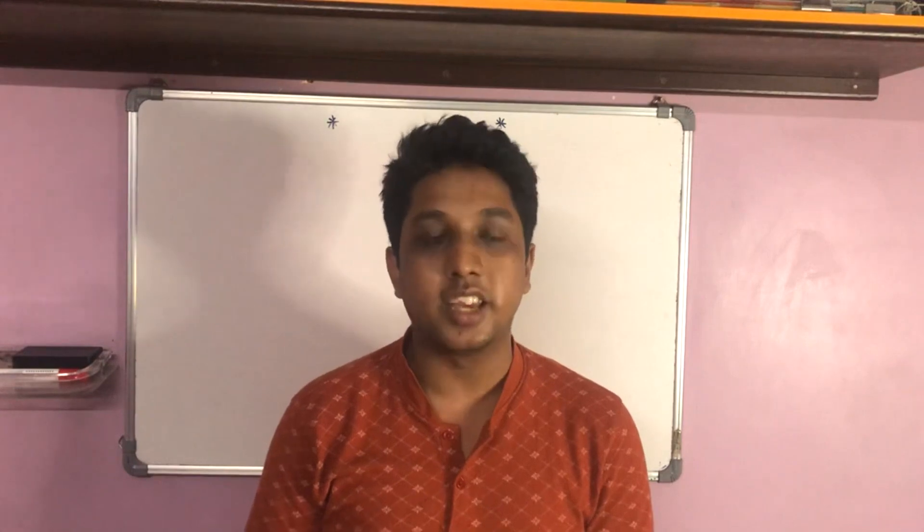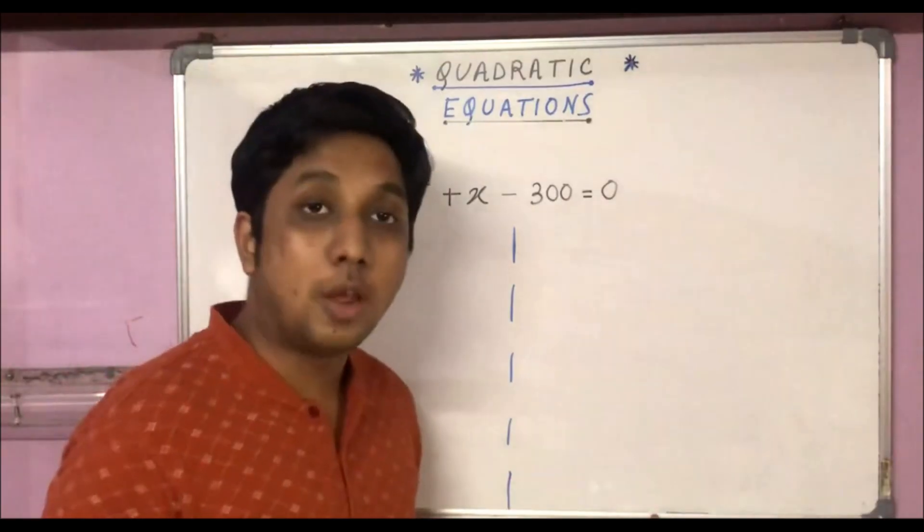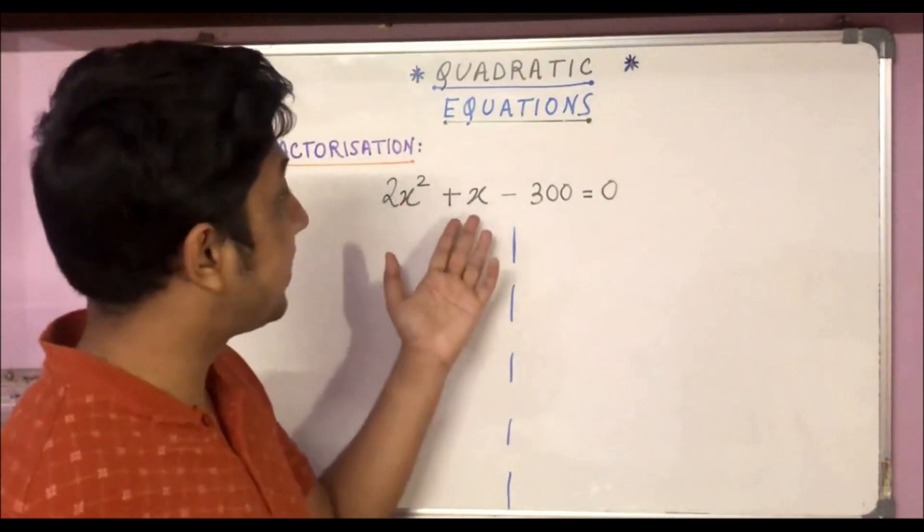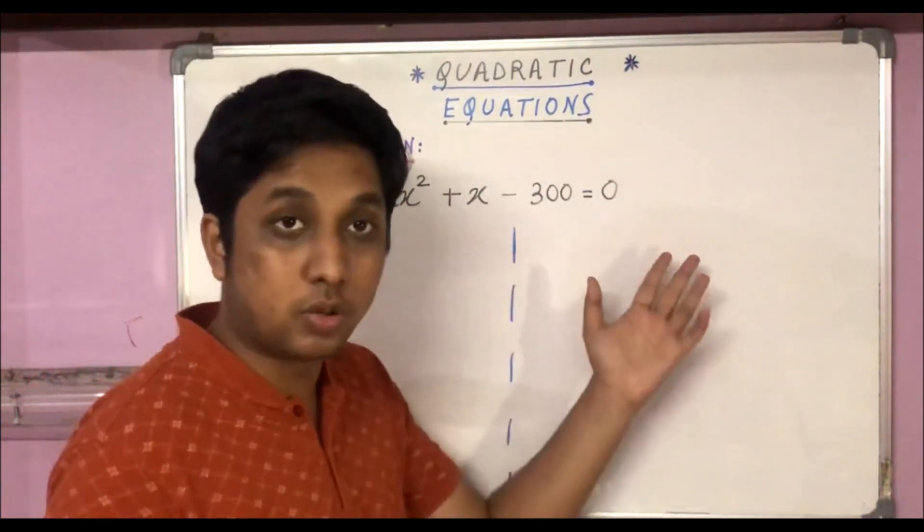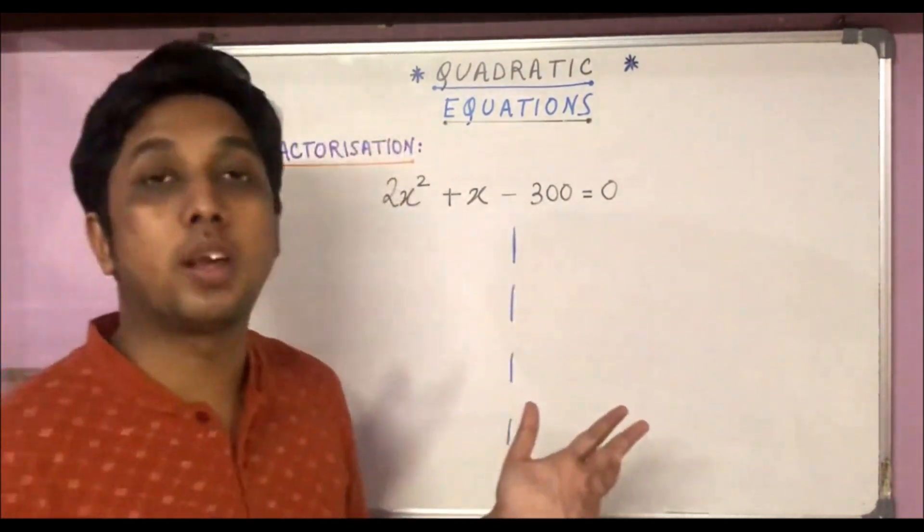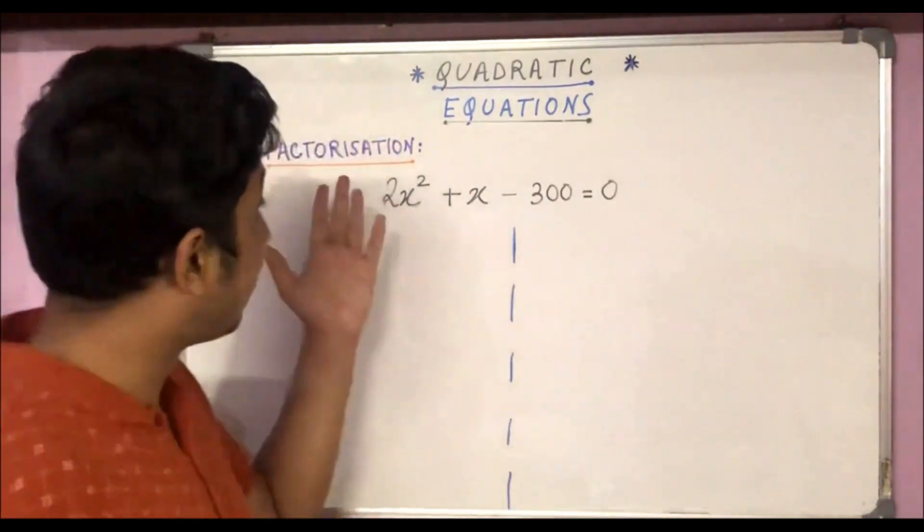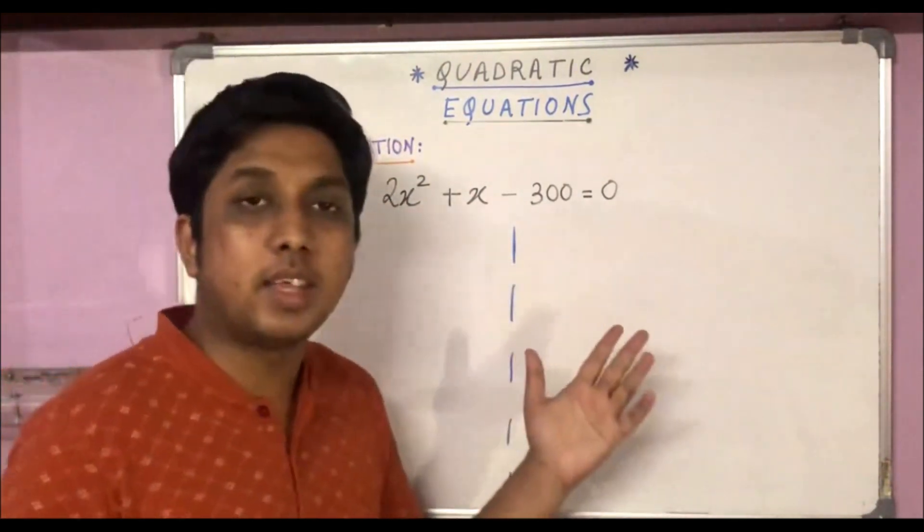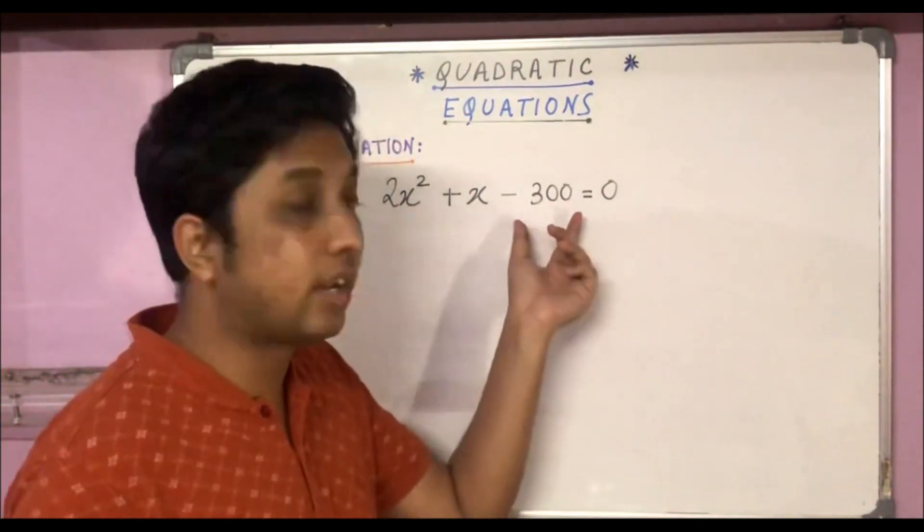Now let's say we have an equation 2x² + x - 300 = 0 and this equation we have to solve using factorization. Here the constant term minus 300 is a big number.